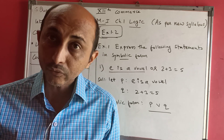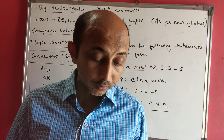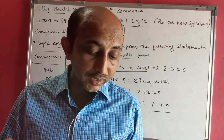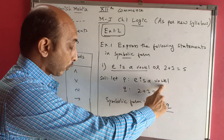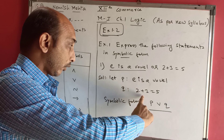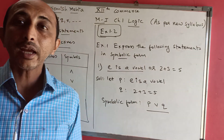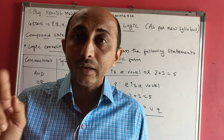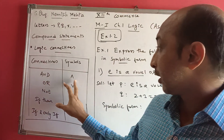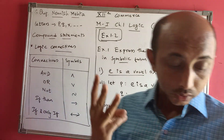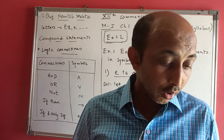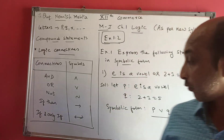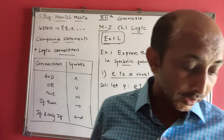Next example: 'Mango is a fruit but potato is a vegetable.' Here P is 'mango is a fruit' and Q is 'potato is a vegetable'. The connective is 'but', and 'but' means 'and' - so we use the ∧ symbol. The symbolic form is P ∧ Q. Question 3: 'Milk is white or grass is green' - P is 'milk is white', Q is 'grass is green', and the connective 'or' gives the symbol ∨ between them.